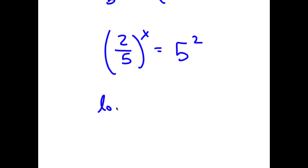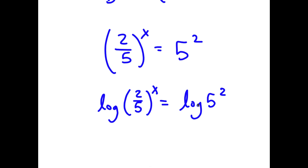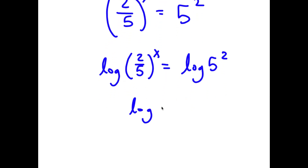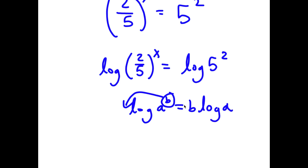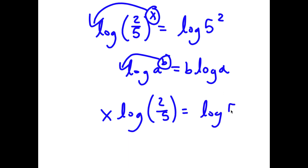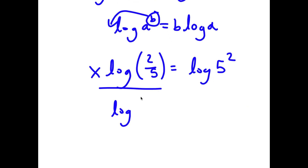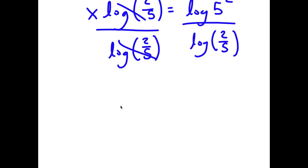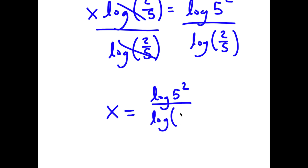Now, I'm going to take the log on both sides. So I get log of 2 over 5 to the power of x is equal to log of 5 squared. And if I have something in the form log a to the power of b, I can move this exponent b to the front. So for log 2 over 5 to the power of x, I can move x to the front. And now I have x times log 2 over 5 is equal to log of 5 squared. Now I'm going to divide both sides by log 2 over 5. These two cancel out, and now I get x is equal to log of 5 squared over log of 2 over 5.